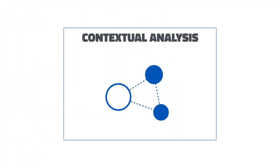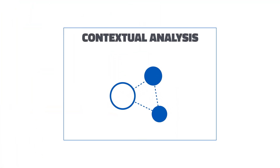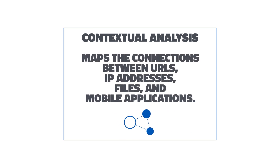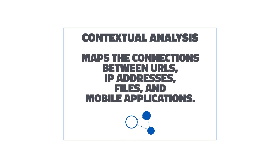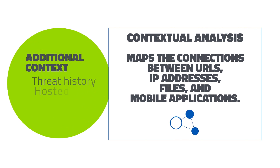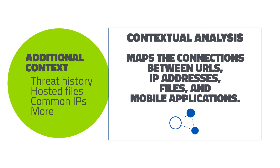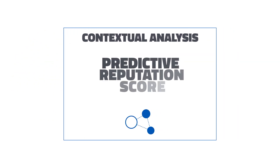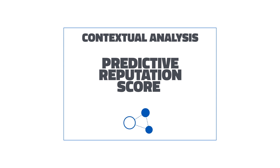To account for this, data is fed into a proprietary contextual database that maps the connections between URLs, IP addresses, files, and mobile applications. Combined with additional context including threat history, hosted files, common IPs, and more, this provides a predictive reputation score for each URL and IP address, enabling proactive protection against risky inbound and outbound traffic.